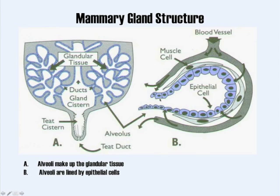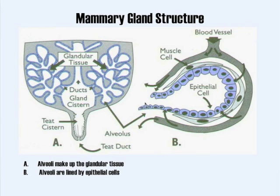When an animal has a milk let-down, stimulation of the gland or psychic stimulation causes the brain to release oxytocin from the pituitary gland. The oxytocin comes down in the blood, makes these muscle cells contract, and it's like a hand squeezing around the alveolus, pushing the milk out. You often see the gland start to swell and sometimes cows will actually drip milk.